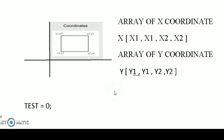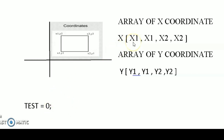To do the XOR of the x-coordinate array, we first take a test element that is 0. We compute: 0 XOR x1 gives x1 (since XOR with 0 gives the same number); then x1 XOR x1 gives 0 (since XOR of a number with itself gives 0); then 0 XOR x2 gives x2; and finally x2 XOR x2 gives 0.